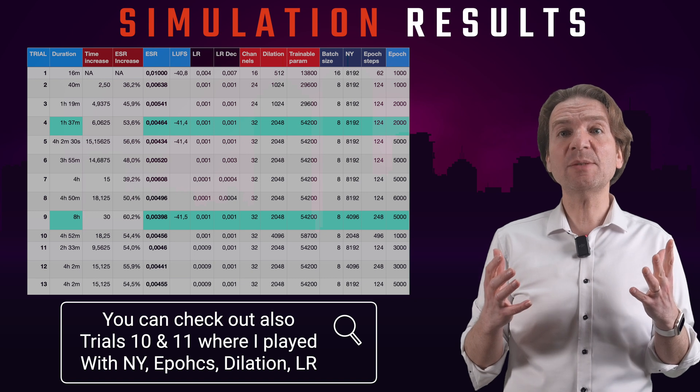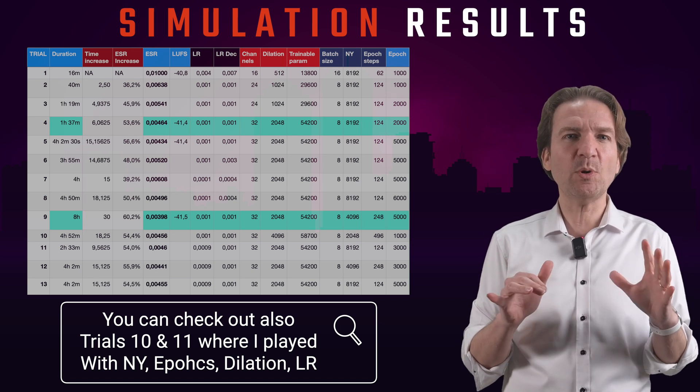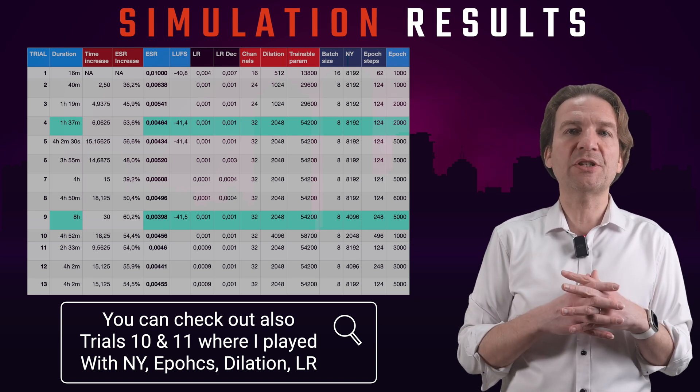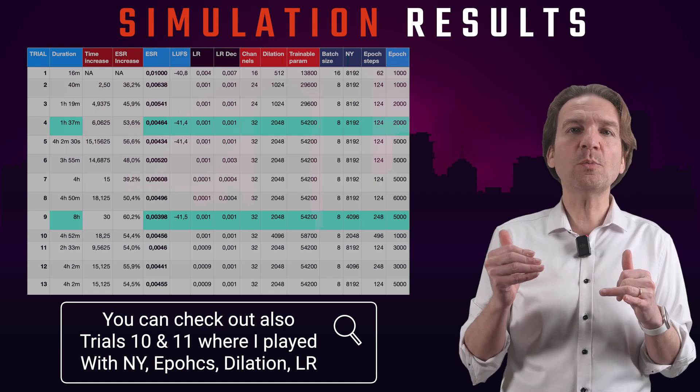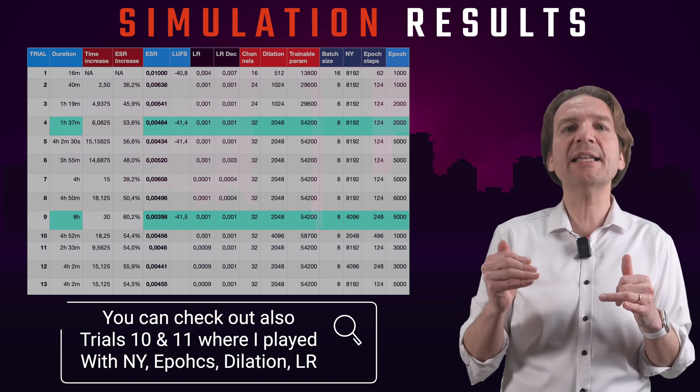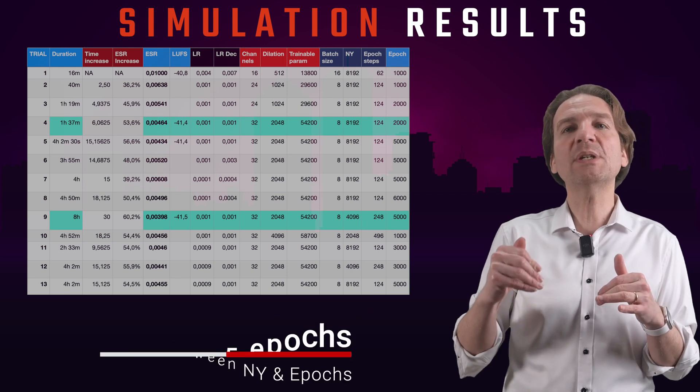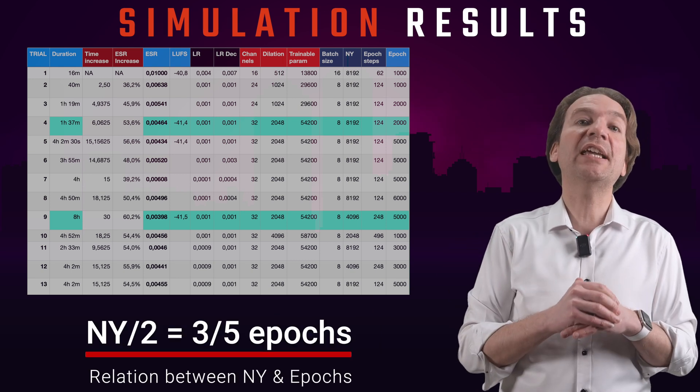But actually the trial 12 seems to be a bit more efficient reaching a slightly better ESR. And actually there seems to be a relation between the epochs and the NY parameter. I mean, half NY gets almost the same ESR in the same time, but with 3 fifths of the epochs.